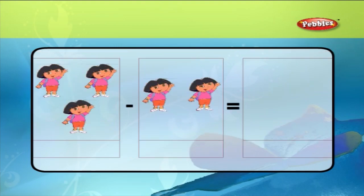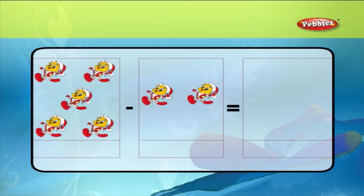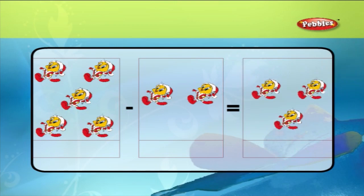Let us try out some examples. Three Doras minus two Doras is equal to one Dora. We write it as three minus two is equal to one. Five tweety birds minus two tweety birds is equal to three tweety birds. We write it as five minus two is equal to three.